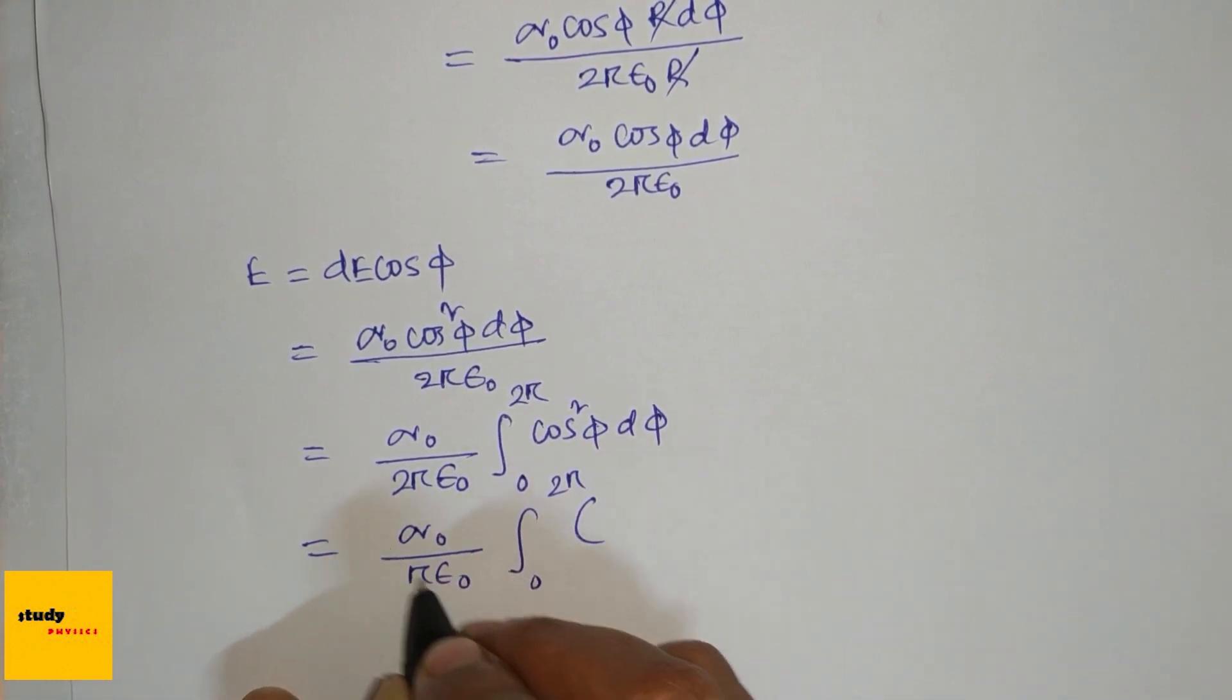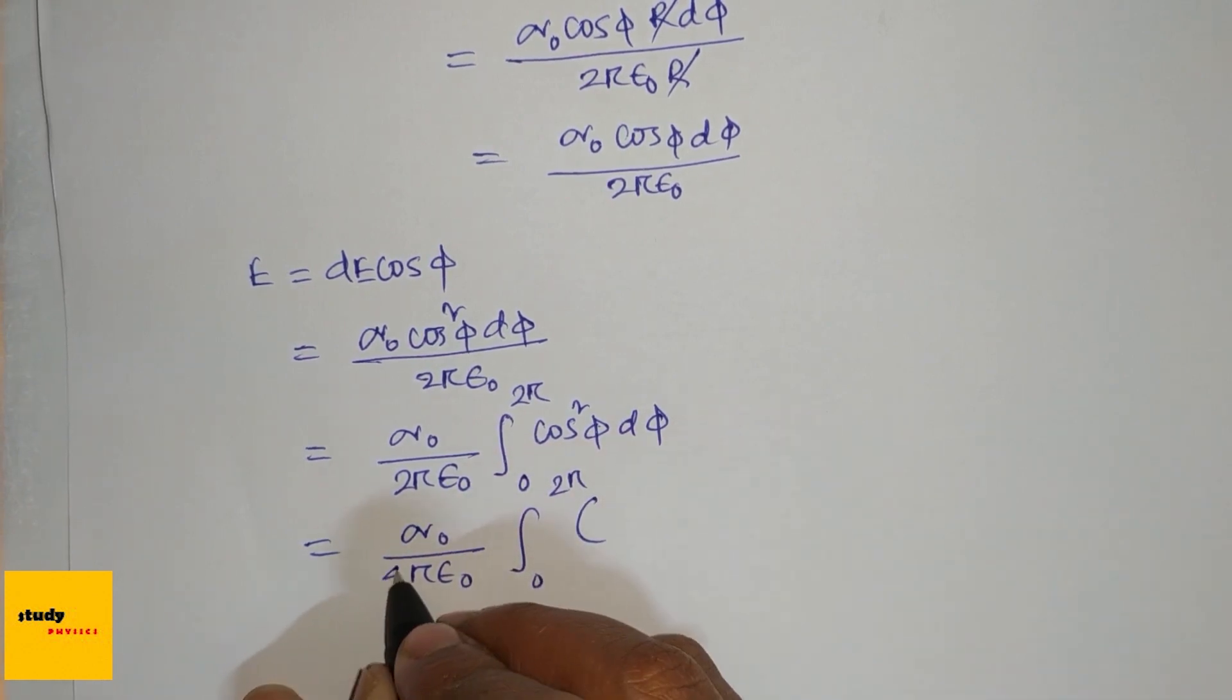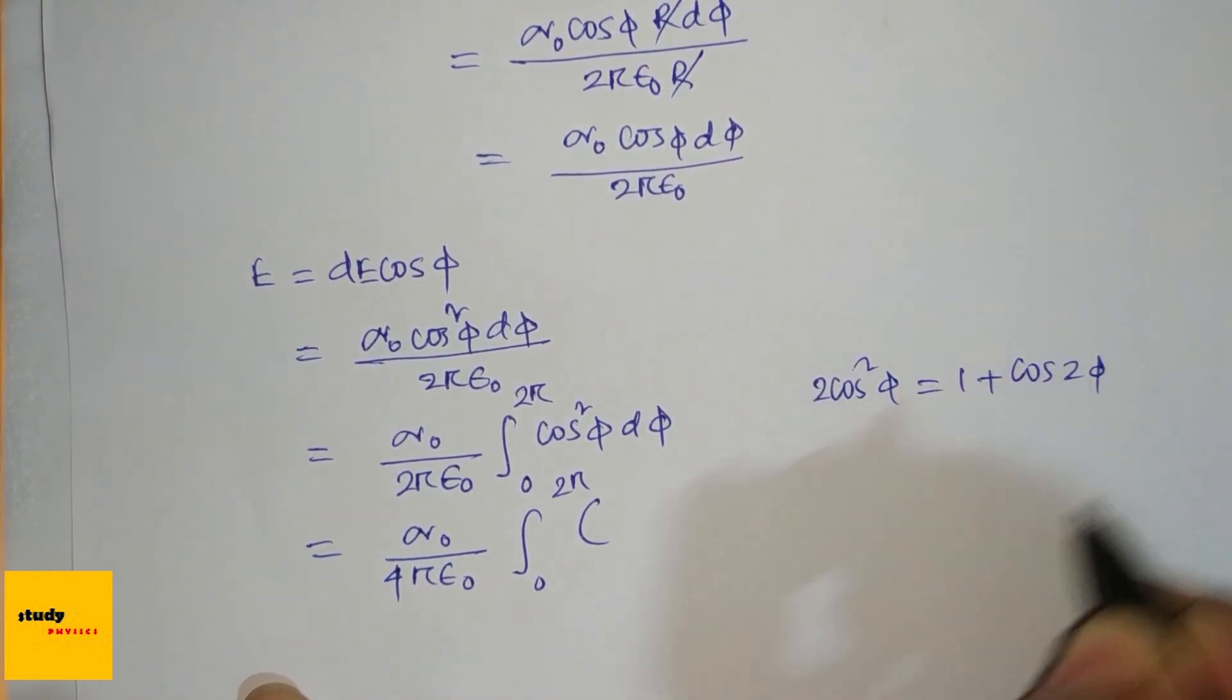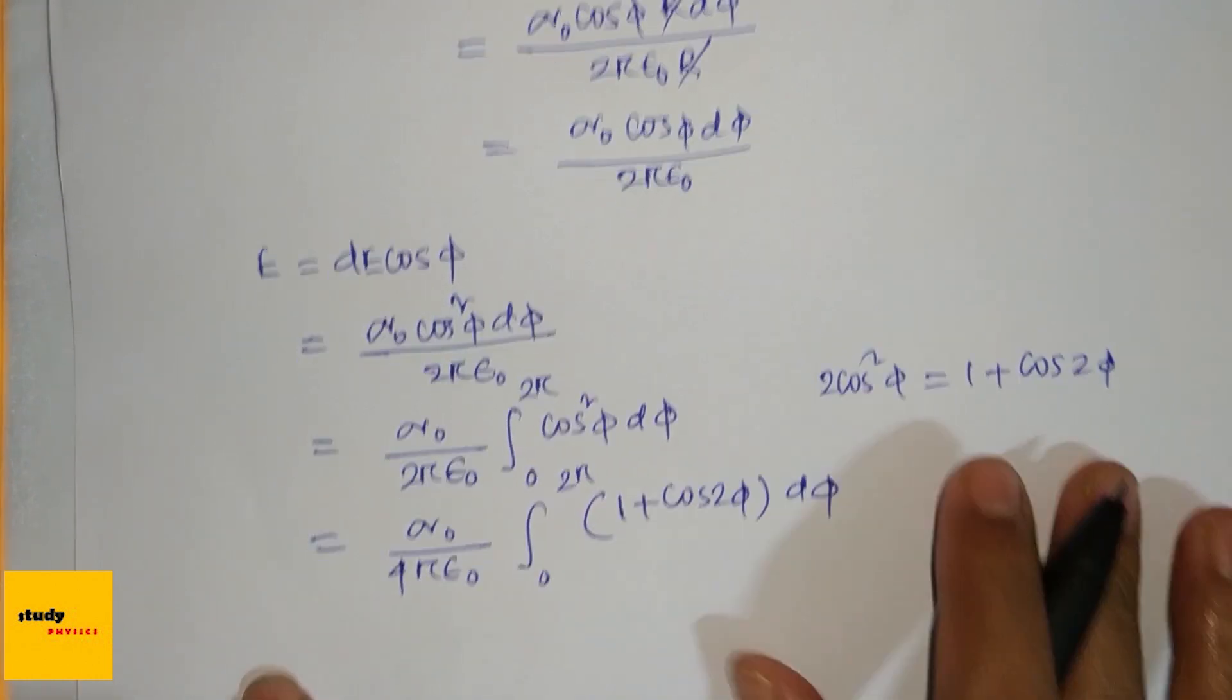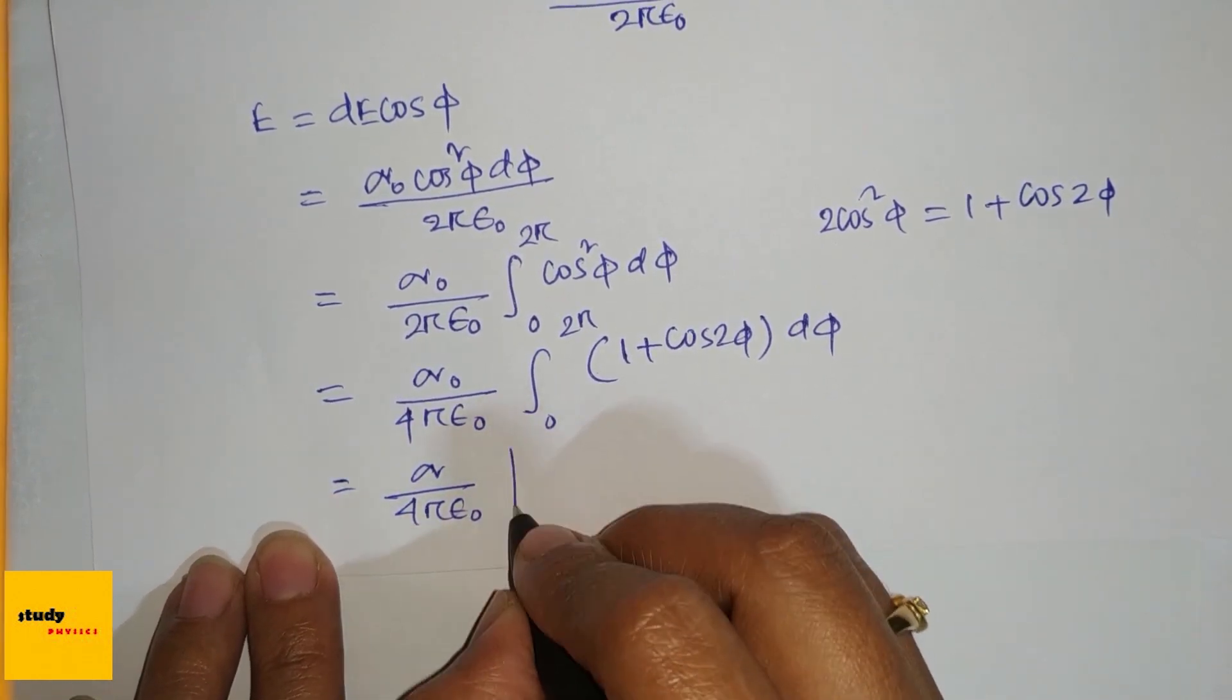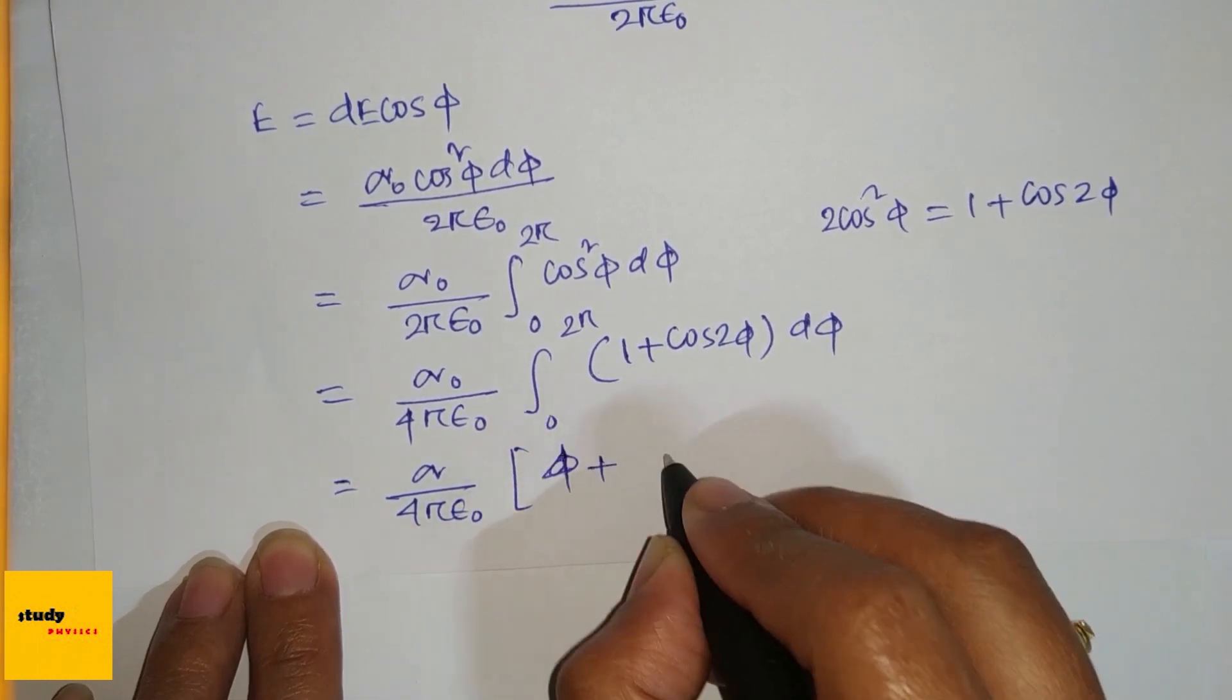This is 2 cos²(phi). We know 2 cos²(phi) equals 1 plus cos(2phi). So we have 1 plus cos(2phi) d(phi), which gives sigma_0 divided by 4π epsilon_0.